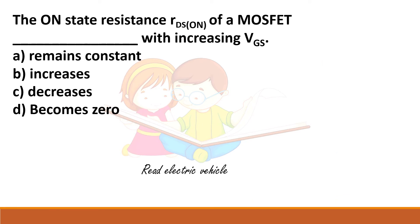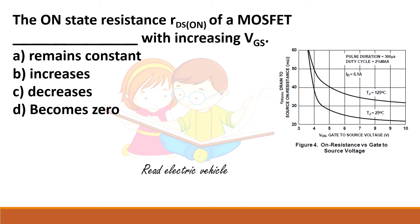The on-state resistance of a MOSFET decreases with increasing VGS. At low gate voltages, the on-state resistance is very high, but as VGS is increased, the resistance drops. However, you cannot increase VGS beyond the maximum gate-source voltage limit. Within that limit, increasing VGS reduces the on-state resistance and thereby reduces losses.